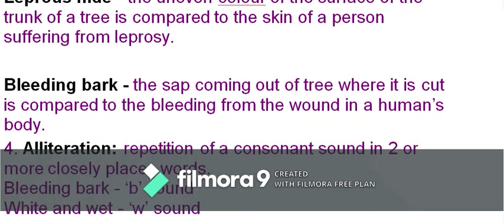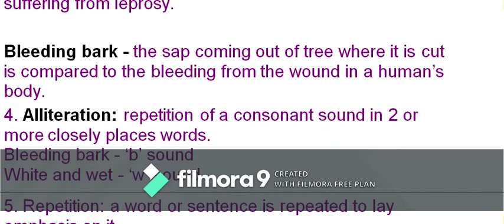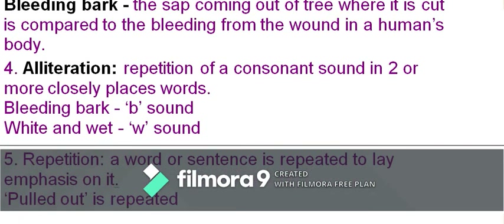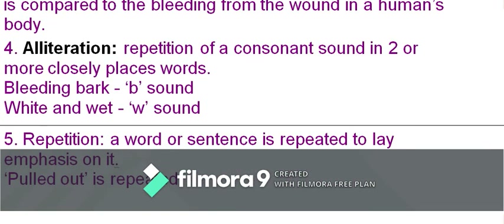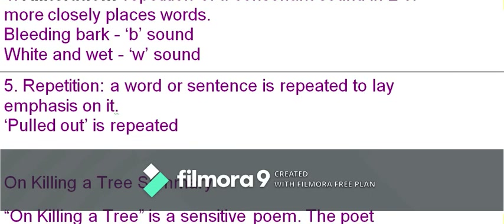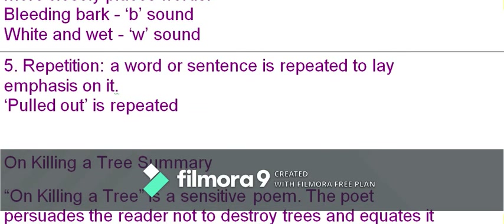Alliteration is the repetition of a consonant sound in closely placed words. Examples: 'bleeding bark' (B sound repeated), 'white and wet' (W sound repeated). Repetition is when a word or phrase is repeated to lay emphasis — 'pulled out' is repeated in the third stanza.